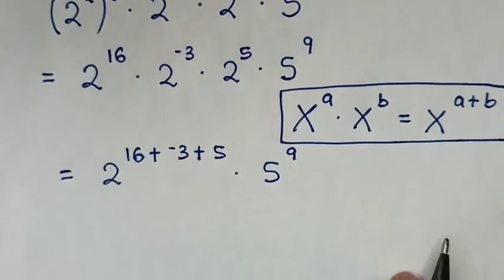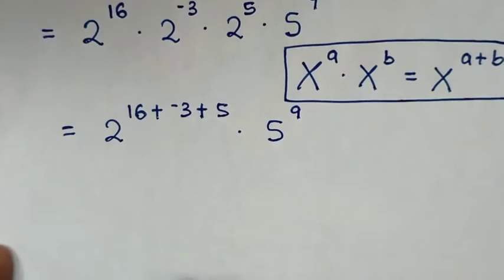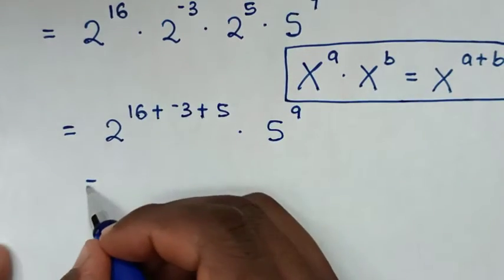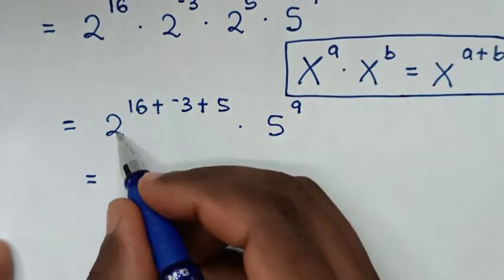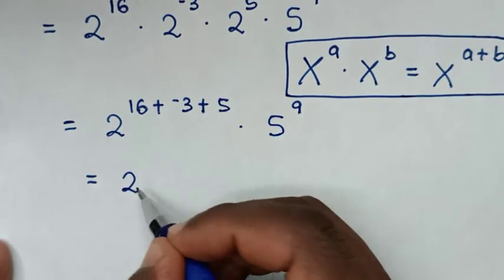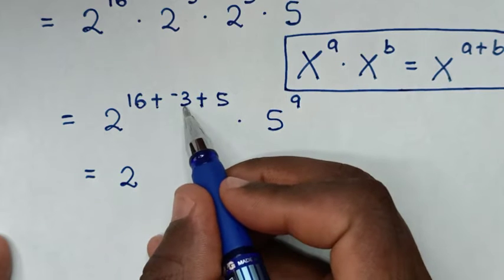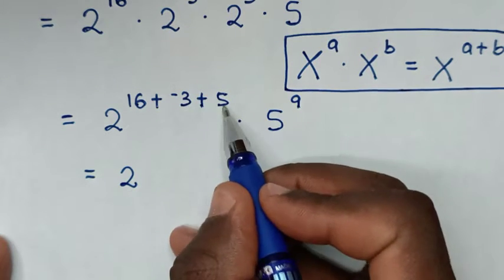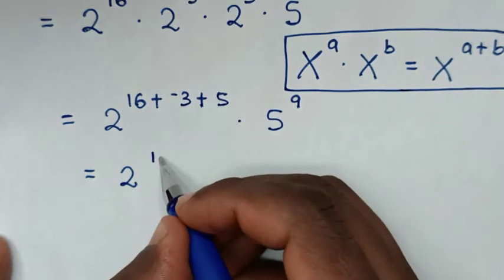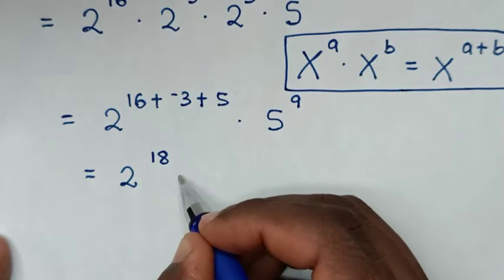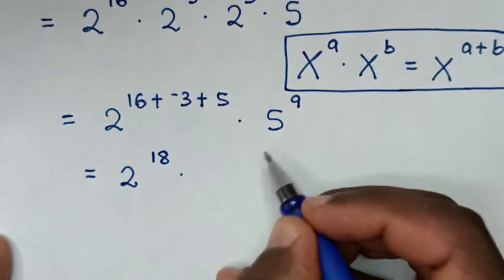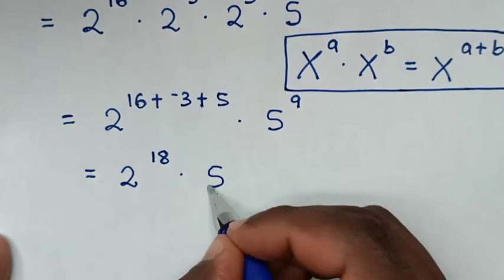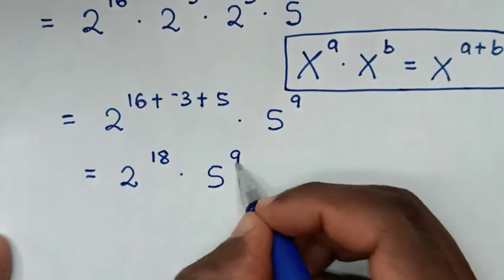Then in the next step, it will be equal to 2 power of 16 minus 3 is 13, 13 plus 5 is 18, then times 5 power of 9.